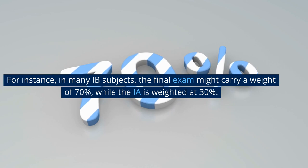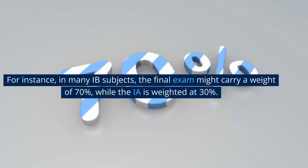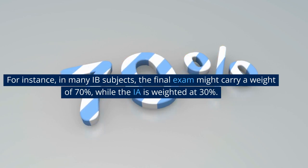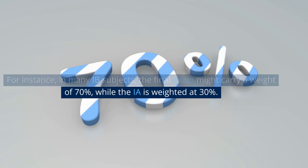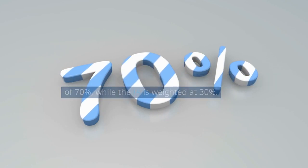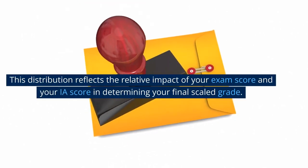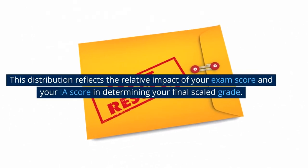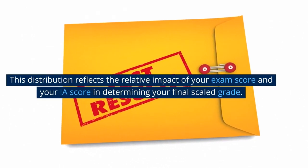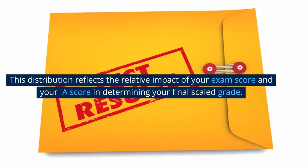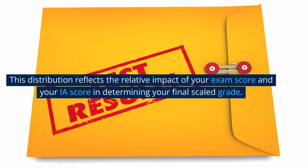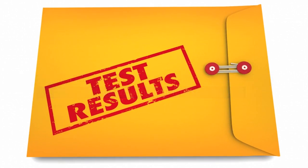For instance, in many IB subjects, the final exam might carry a weight of 70%, while the internal assessment (IA) is weighted at 30%. This distribution reflects the relative impact of your exam score and your IA score in determining your final scaled grade.